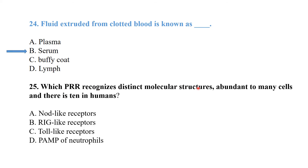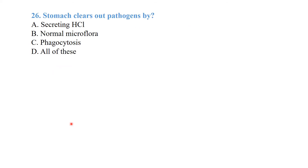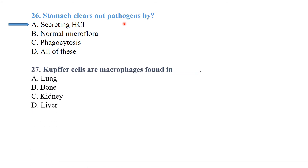Pattern recognition receptors recognize distinct molecular structures abundant on many cells. There are 10 toll-like receptors in humans. These are pattern recognition receptors. The stomach clears out pathogens by secreting hydrochloric acid. Kupffer cells are macrophages found in the liver.